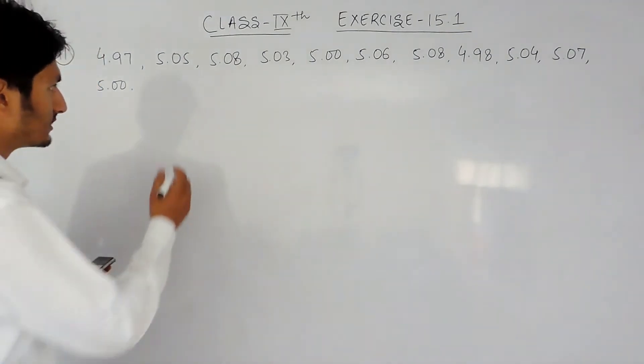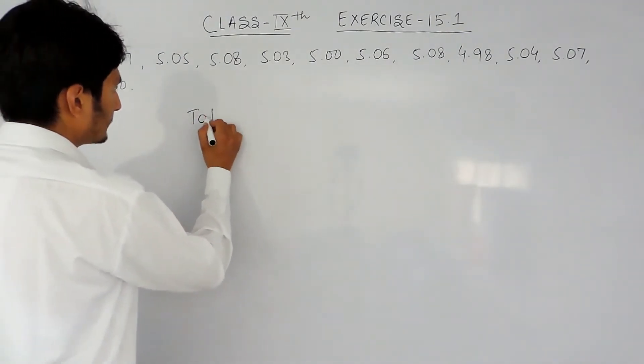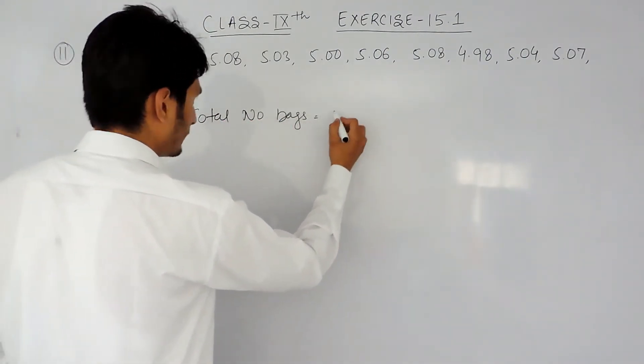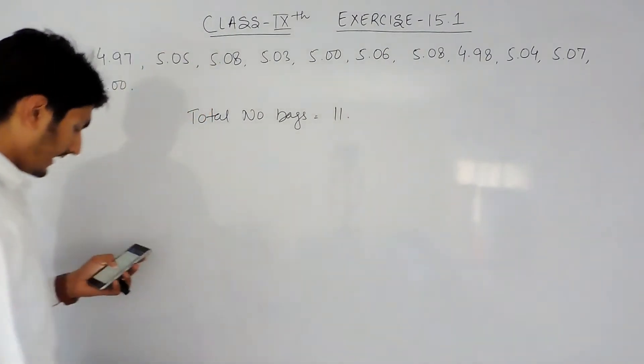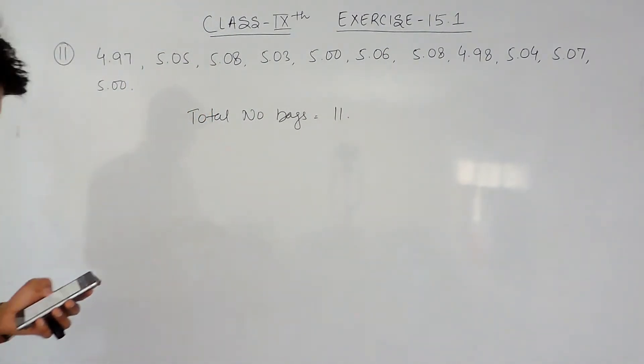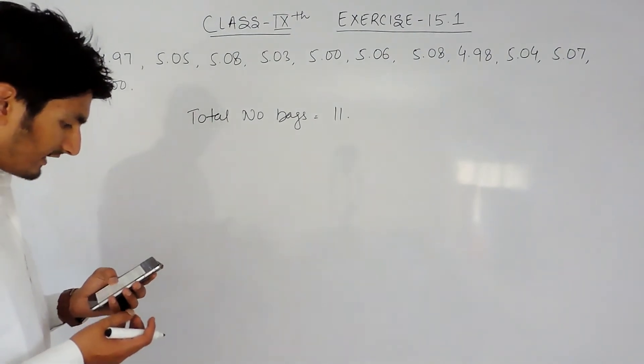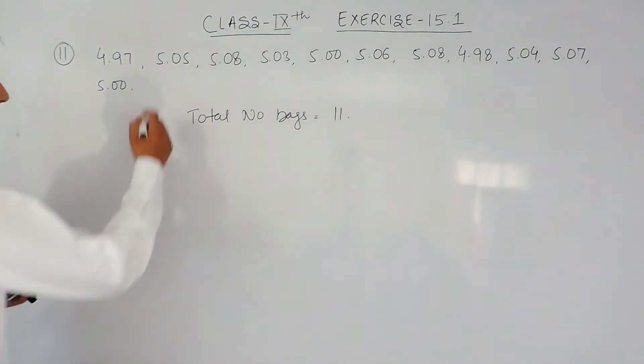In this case, total number of wheat bags is given to us as 11 and we have to find the probability that these bags contain more than 5 kg of flour. In that case this is our first...